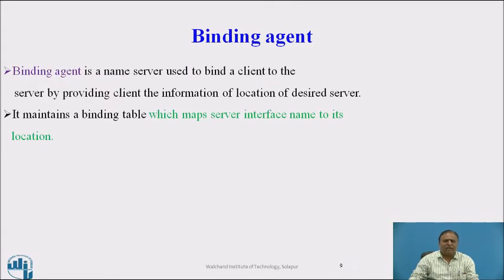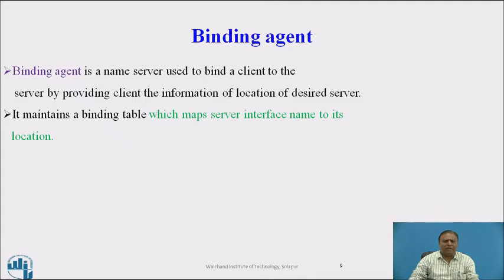A binding agent is used to bind a client to a server by providing the client with the location information of the desired server. The binding agent maintains a binding table which maps the server interface name to its location. All servers register themselves with the binding agent by providing their interface name and a handle used to locate them. A server can also deregister itself when it is no longer prepared to give service. Deregistering can be done automatically by the binding agent, which polls servers periodically and deregisters those that fail to respond. To locate a server, the client contacts the binding agent; if the server is registered, the binding agent returns its handle to the client. Then the client can directly interact with the server. The binding agent's location is known to all nodes and a fixed address is used for it.